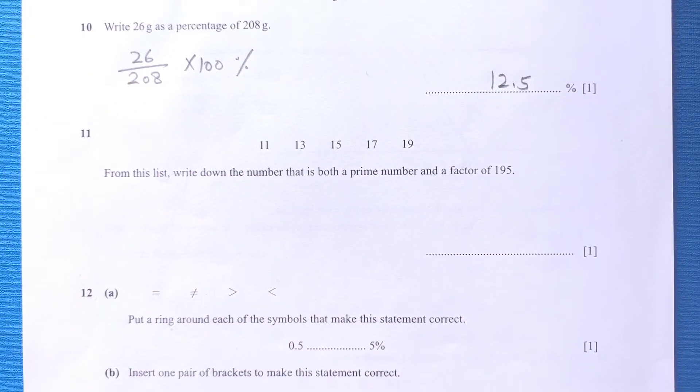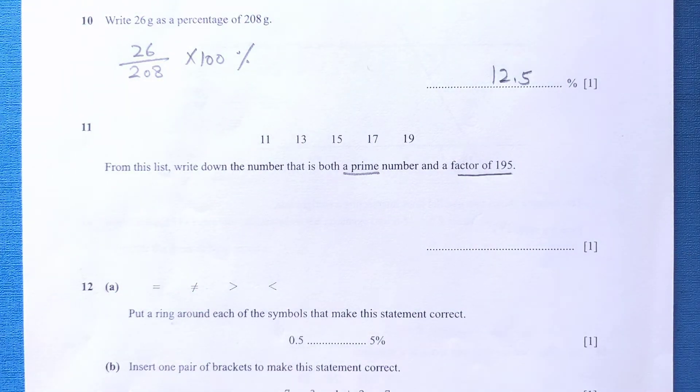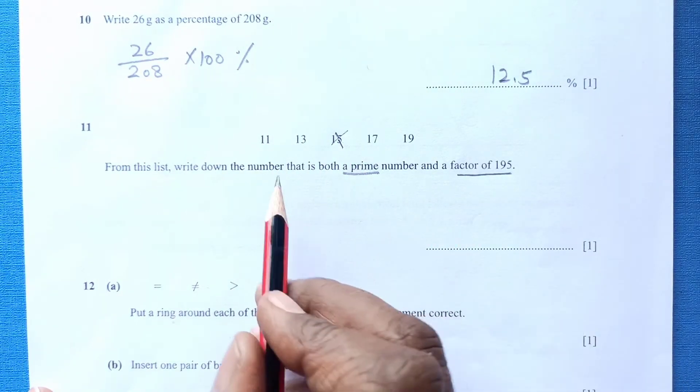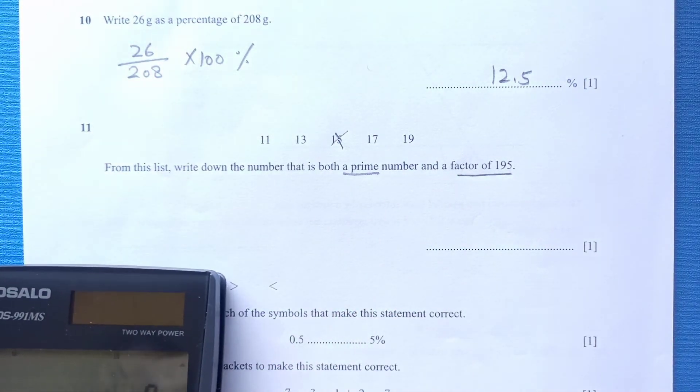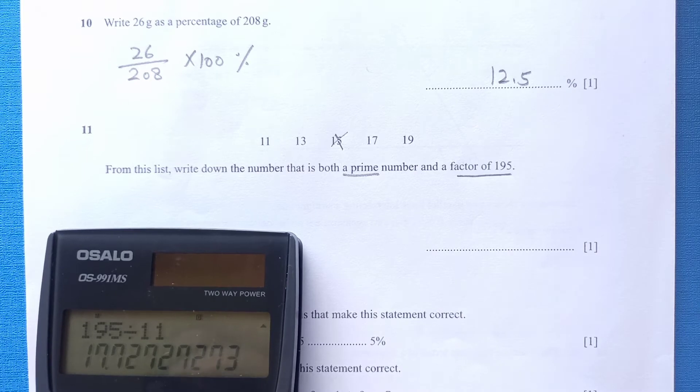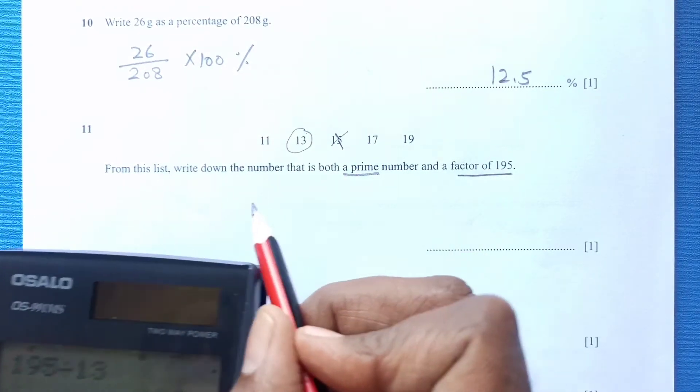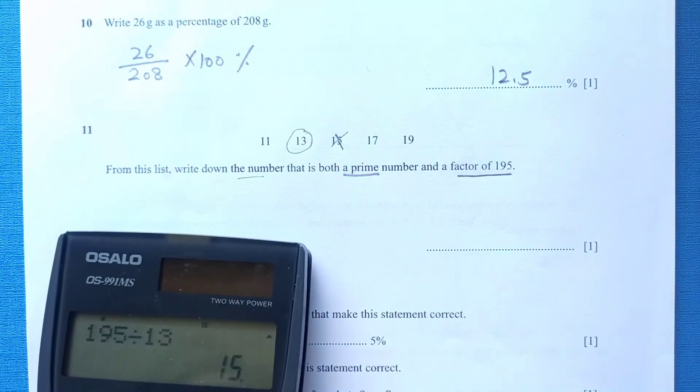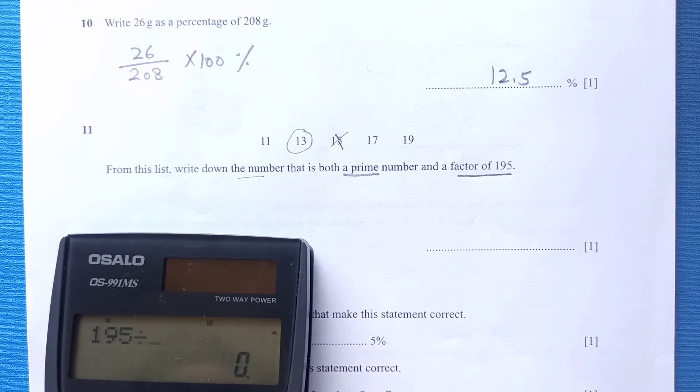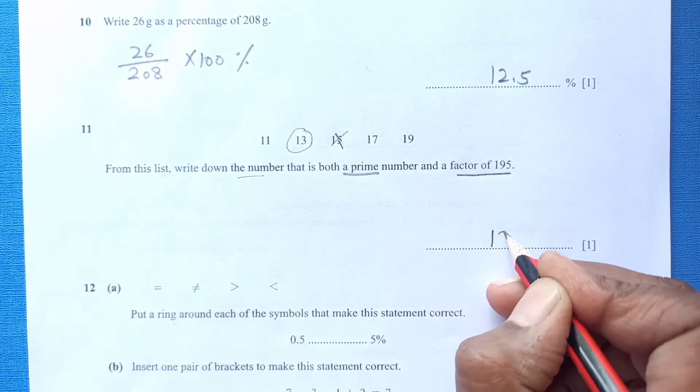Number 11: From the list, write down the number that is both prime and factor of 195. We are looking for a number which is prime and factor. We can first see which we can cross out the number which is not prime here. You can see 15 is not prime, so it cannot be the answer. Now 11, we need to see if they divide this one. 195 divided by 11, you get decimal, so it is not the factor. Then we have 195 divided by 13, it is 15. 195 divided by 17, decimal, no. 195 divided by 19, again decimal. So only number is 13.